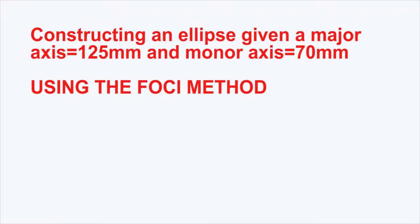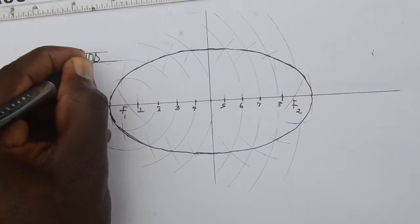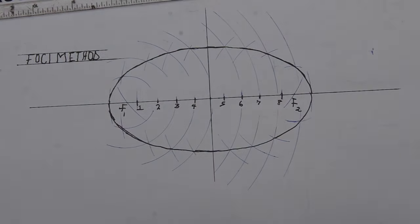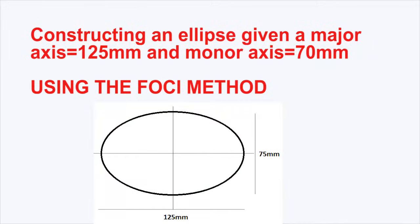Welcome to this video. A quick shout out to my subscribers - we made 1000! If you're here for the first time, feel free to do the same: like, subscribe, and click the notification bell. Today we're constructing an ellipse given the major axis equal to 125 millimeters and minor axis equal to 70 millimeters, and we're using the foci method.